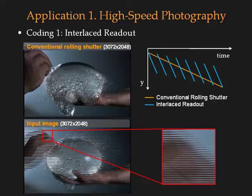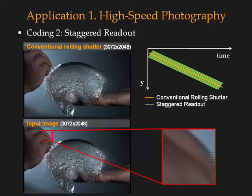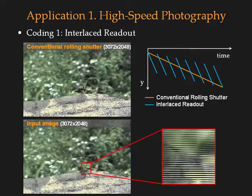We show two more examples. This is the result of interlaced readout for a water balloon bursting. As expected, the skew is greatly reduced. This is the result of staggered readout, showing smooth motion within a short period of time. Here is the result of interlaced readout for a dragonfly taking off. This is the result of staggered readout.